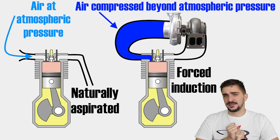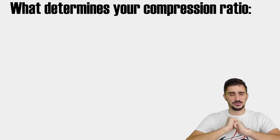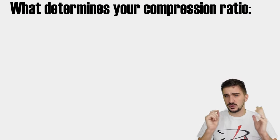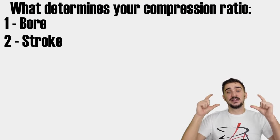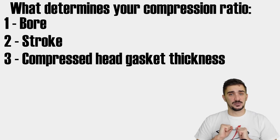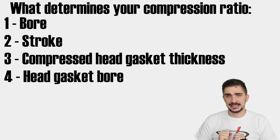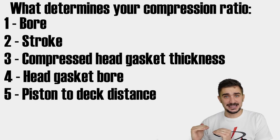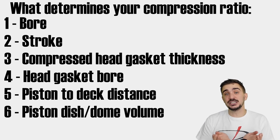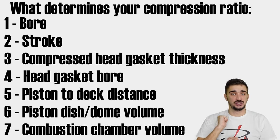So that's the basic theory. Now let's move on to the practical side of things. What actually determines your compression ratio? It's seven things: your engine bore, your stroke, the thickness of your compressed head gasket, the bore of your head gasket, the distance between your piston top and your block deck, the volume of your piston dish or dome, and the volume of your combustion chamber.